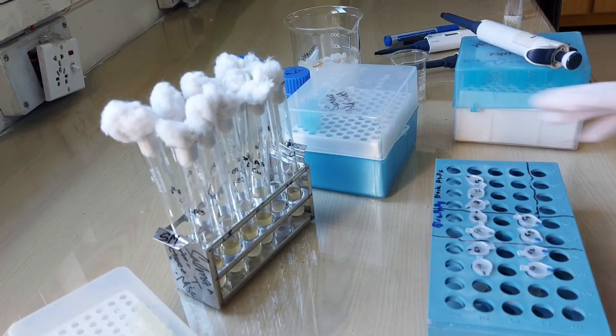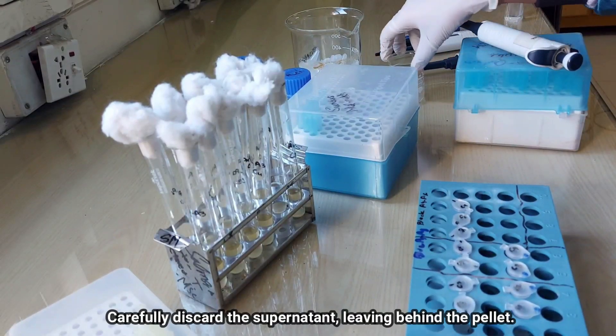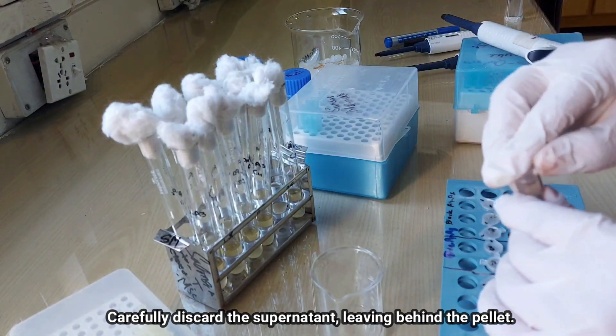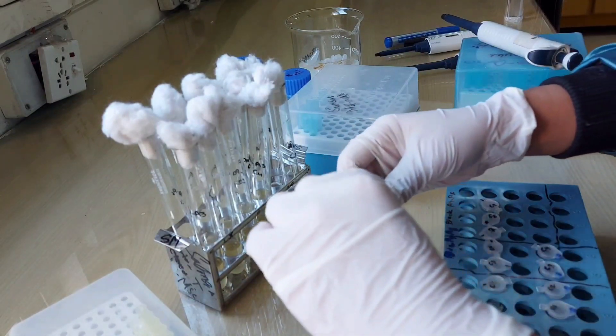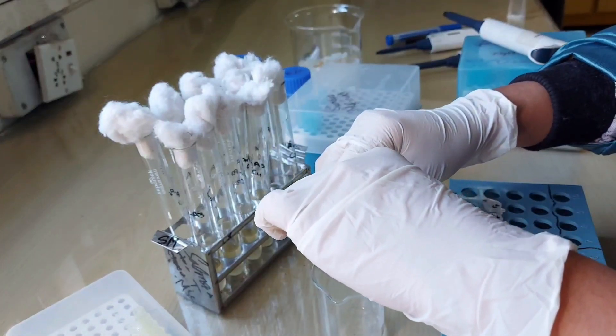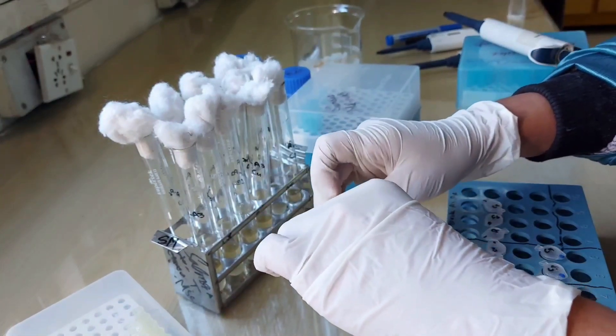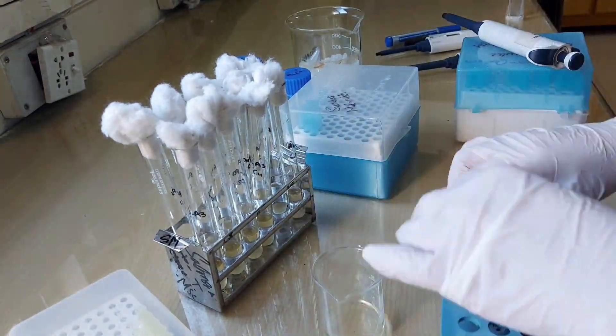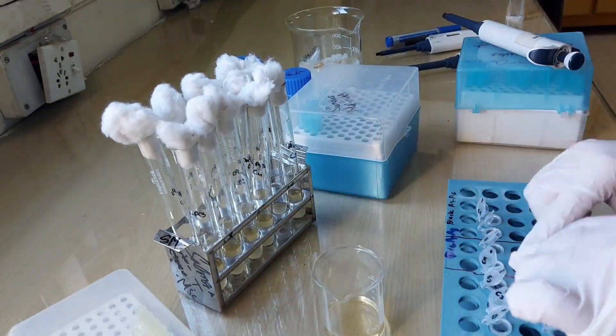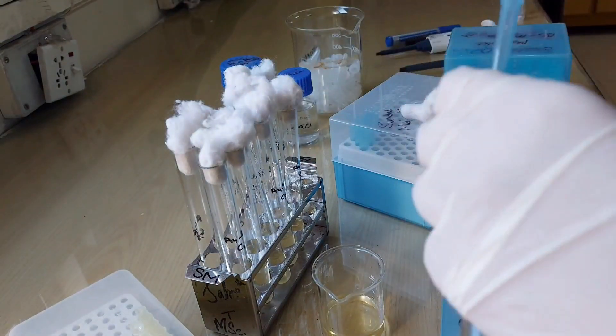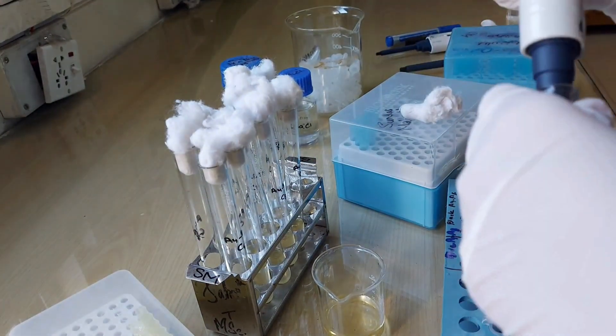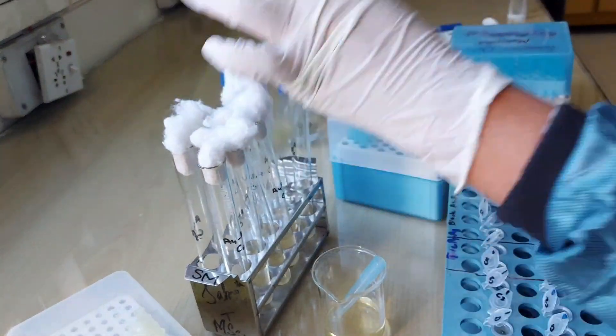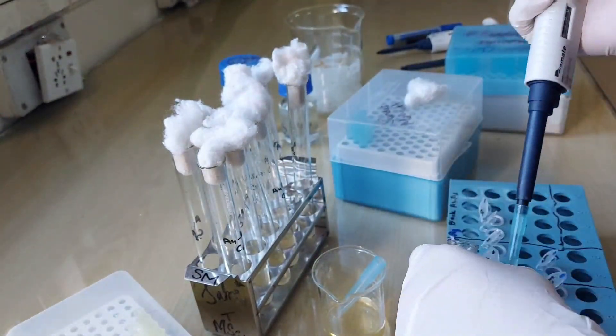Now take a beaker and discard the supernatant into it, leaving the pellet behind. Make sure not to discard the pellet off of the eppendorfs. You can see the pellet at the end of the eppendorfs. Carefully do this to the rest of the eppendorfs. You have to repeat this procedure until all the broth is empty from the test tubes. And at the end you will have a compact thick cell pellet.